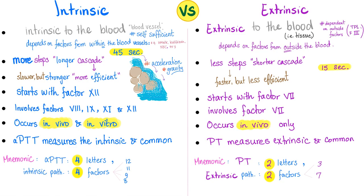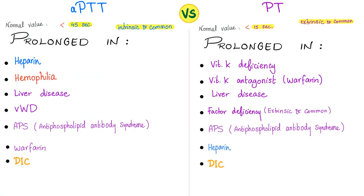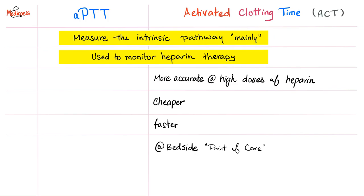We've compared the intrinsic and extrinsic pathways before. Heparin will interfere with both pathways. Warfarin will also interfere with both pathways. It just happens that it's easier to monitor warfarin using PT and easier to monitor heparin using PTT and ACT. Heparin will prolong everything, including PT, PTT, and even ACT.